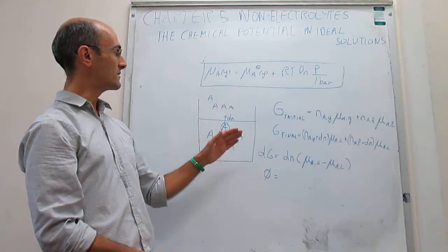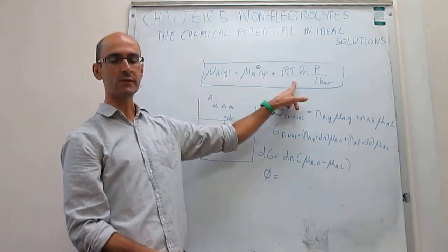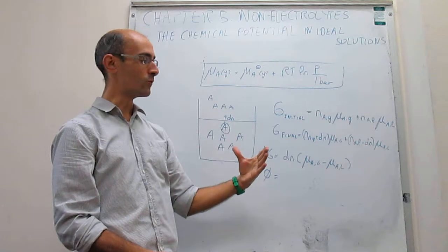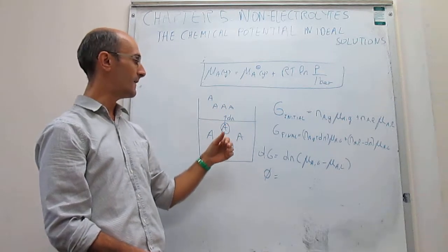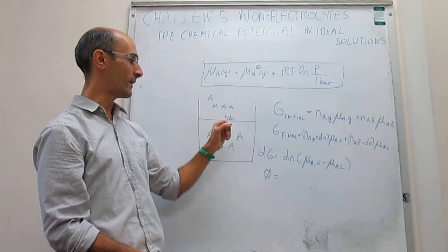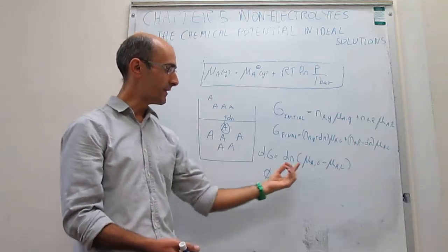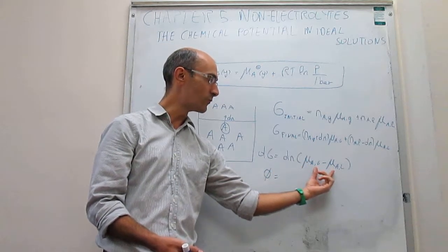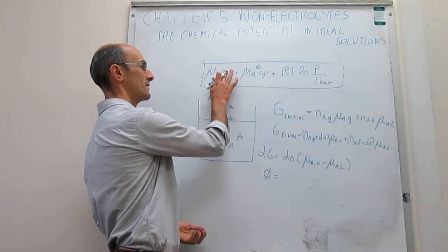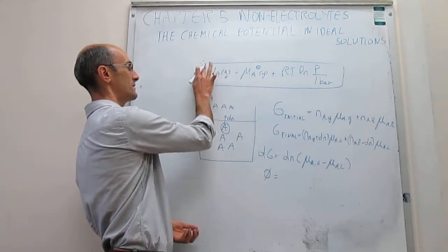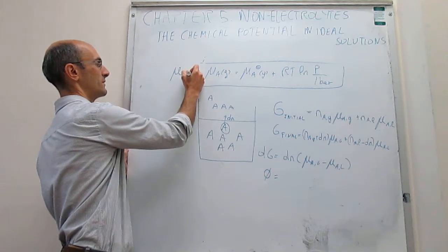This is great because we can rewrite the chemical potential of the liquid phase using the expression for the gas phase. At equilibrium, neither phase pushes the other harder — they both have the same chemical potential. So the gas-phase chemical potential expression at equilibrium is exactly the same as the chemical potential of the liquid. This is our starting point.